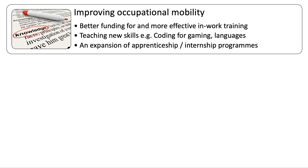When thinking about occupational mobility — the ability to move between industries and jobs — better funding for and more effective in-work training is crucial, giving people new skills and refreshing existing ones. This includes government emphasis on coding, gaming, languages, and STEM subjects — Science, Technology, Engineering, and Maths — as well as an expansion of apprenticeship schemes and paid internships. The key is to stimulate occupational mobility of labor so there is less risk of structural unemployment.